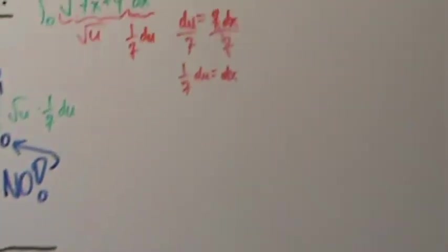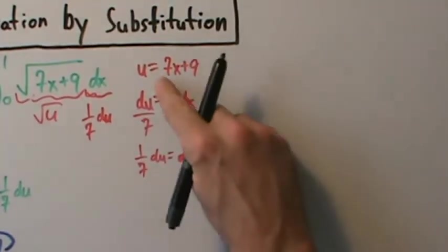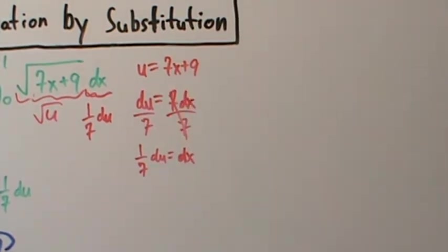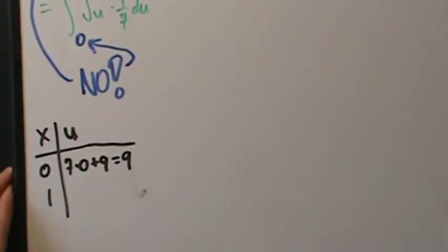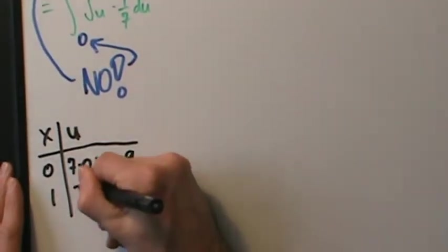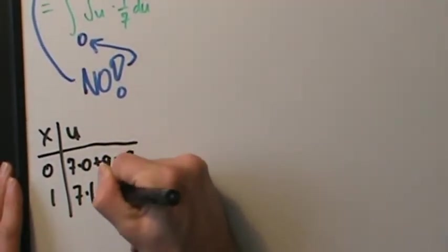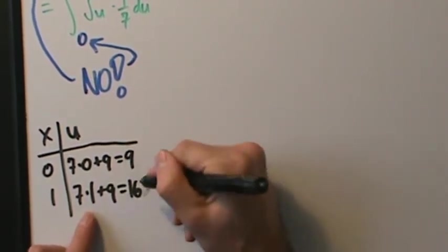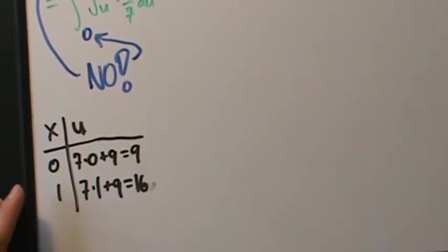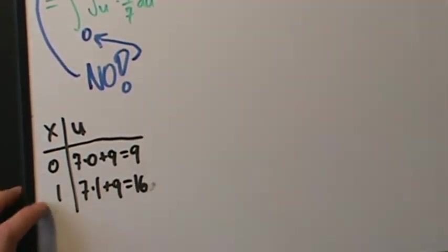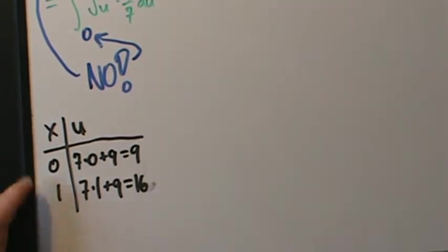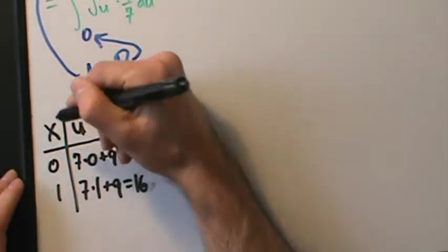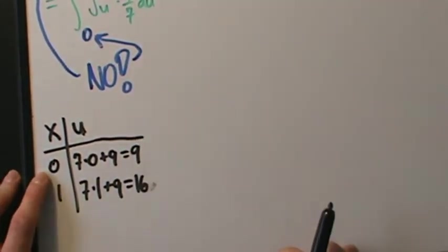When x = 1, u = 7(1) + 9 = 7 + 9 = 16. So when x goes from 0 to 1, u goes from 9 to 16.